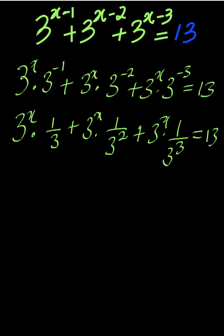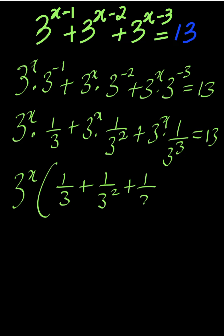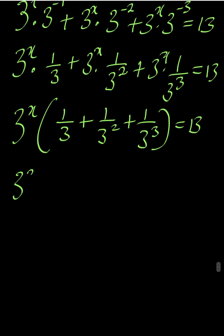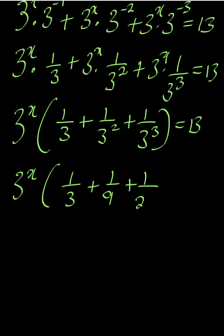3 to the power of x is common. When you factor it out, you have 1 over 3 plus 1 over 3 squared plus 1 over 3 cubed, everything equal to 13. So this gives us 3 to the power of x multiplied by 1 over 3 plus 1 over 9 plus 1 over 27, equal to 13.